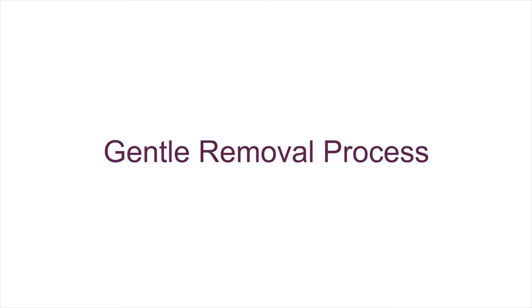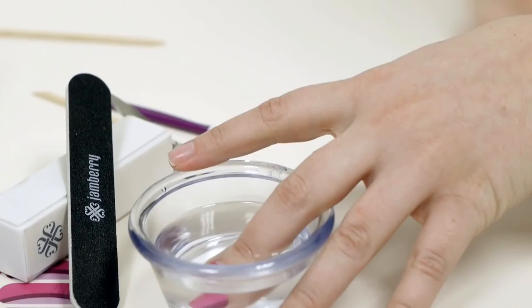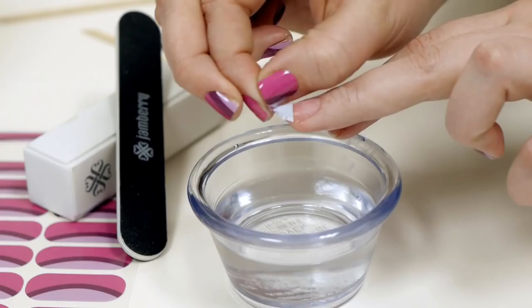For the gentle removal process, heat your nails with a mini heater for five to ten seconds. Then break the seal the same way we did for the quick removal. Soak your nail wraps in nail polish remover for 20 to 30 seconds and gently rub the wrap off your nail. Soaking will break the adhesive bond and allow them to easily slide off your nail bed.